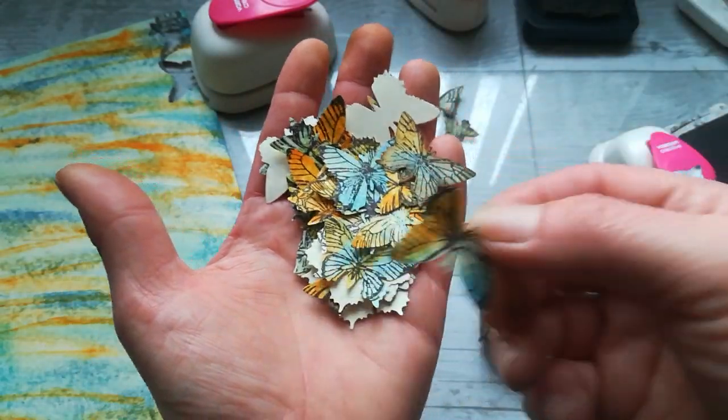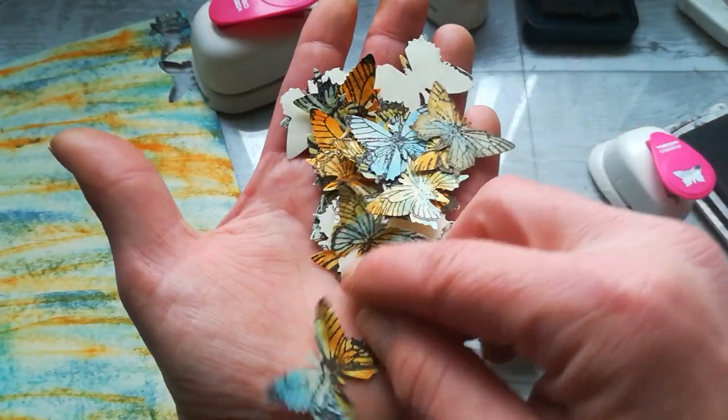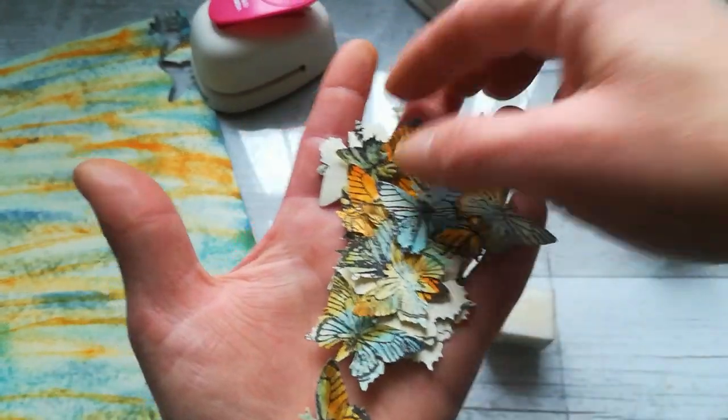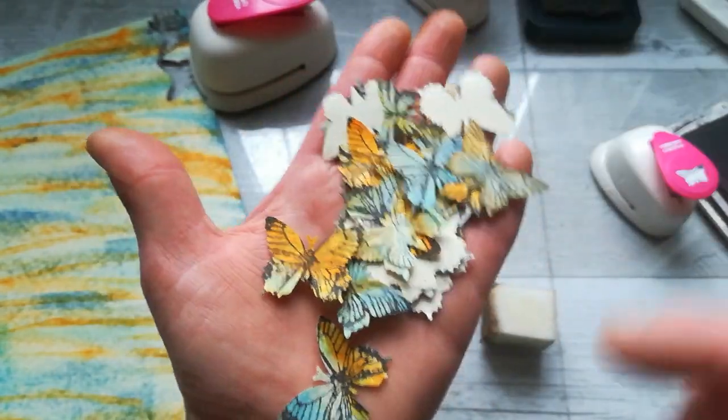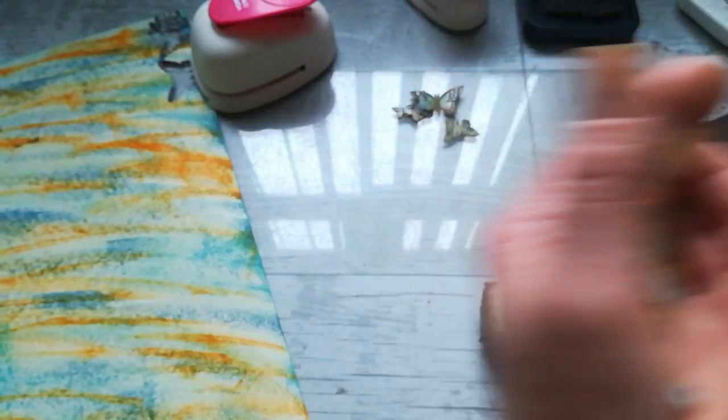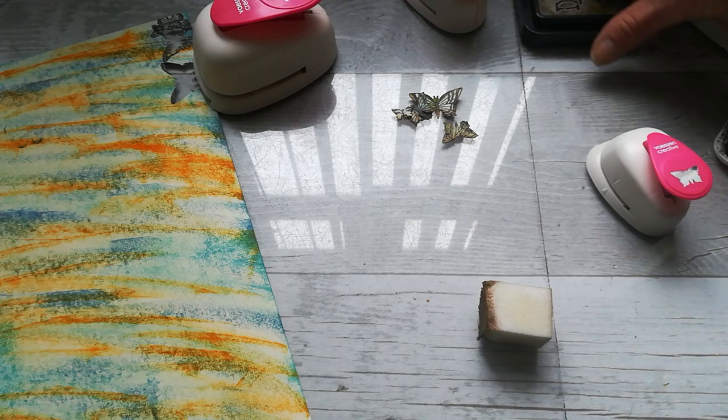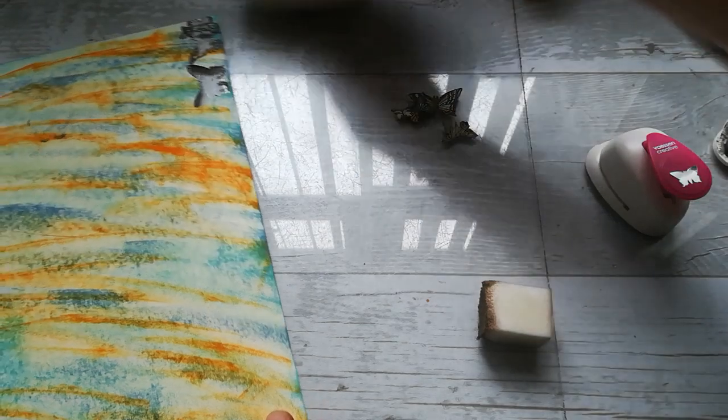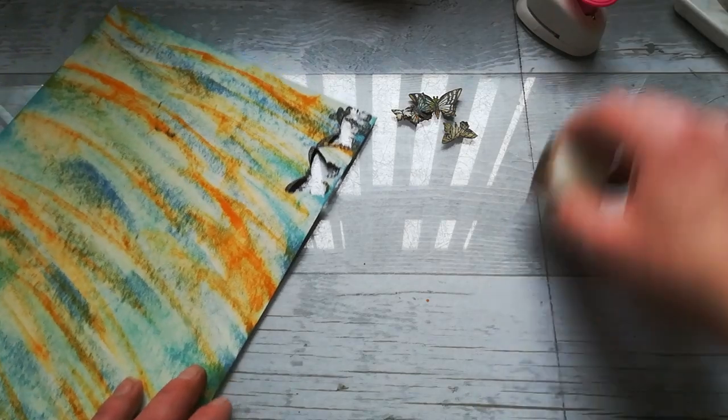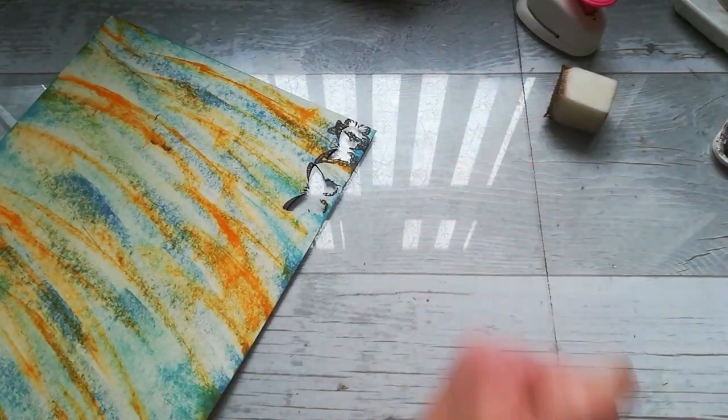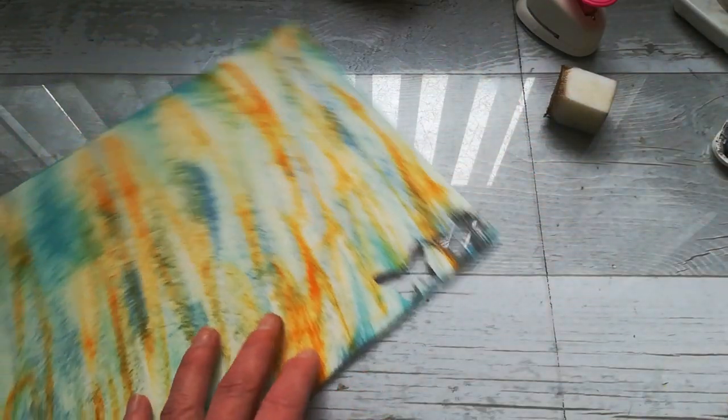So then on those butterflies, it can look totally amazing. You can spray it and then your distress inks will go, you know, they will soak each to each other. They will make totally amazing background for your stamping and punching.